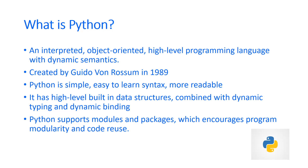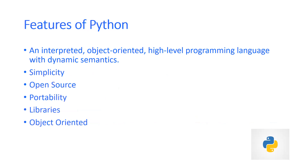Nowadays Python is a very popular language because of its use in AI and machine learning. Python is very simple, easy to learn, and its syntax is more readable. That is why we select Python rather than Java. It has high-level built-in data structures combined with dynamic typing and dynamic binding. Python supports modules and packages and has a huge library, which encourages program modularity and code reuse — important because our lab is based on object-oriented programming.